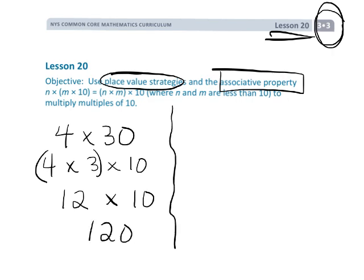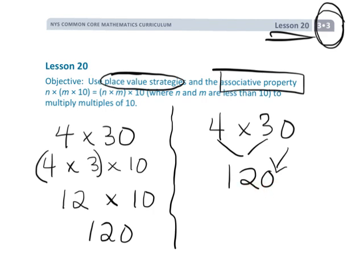So that would be one way to do it, as opposed to the old traditional way of teaching kids to just take the 4 times 3, get the 12, and then drop down the 0. We want to be more thoughtful than just using this little trick. We really want to demonstrate why this works, and it's really a matter of the associative property.